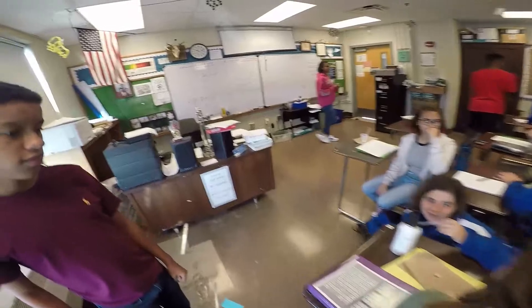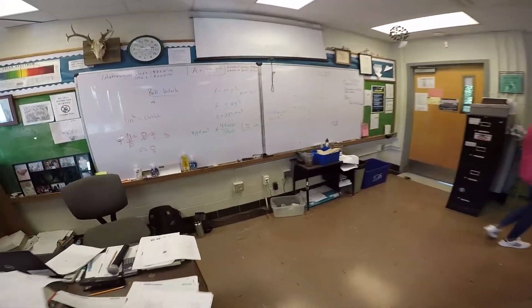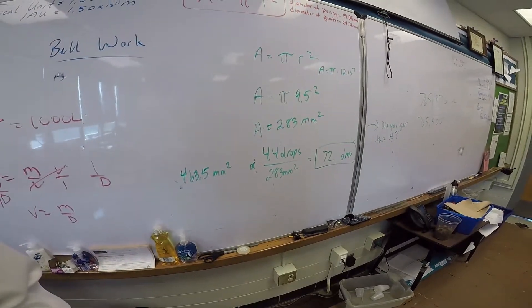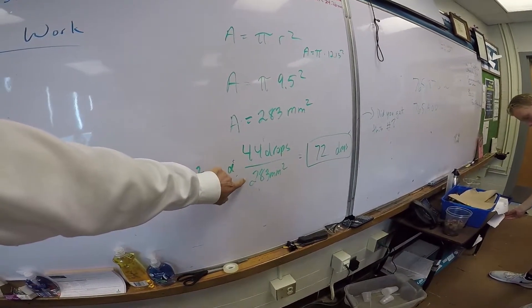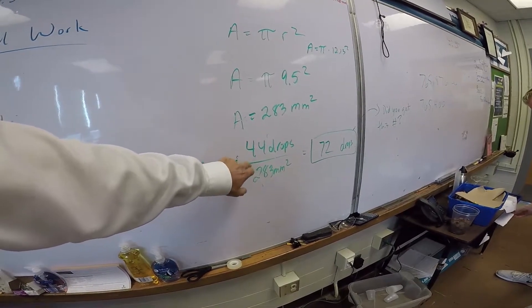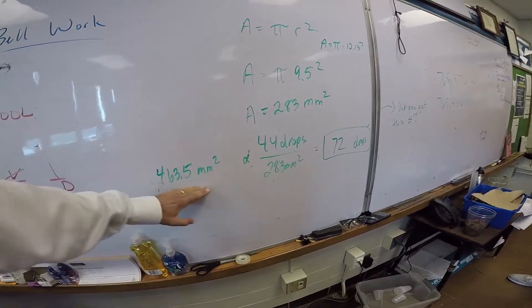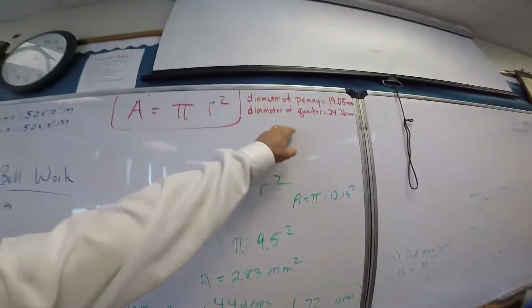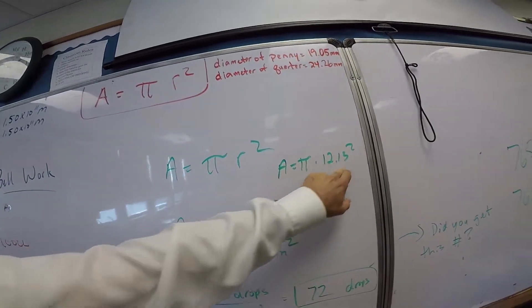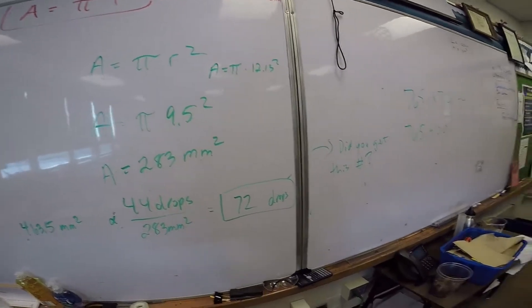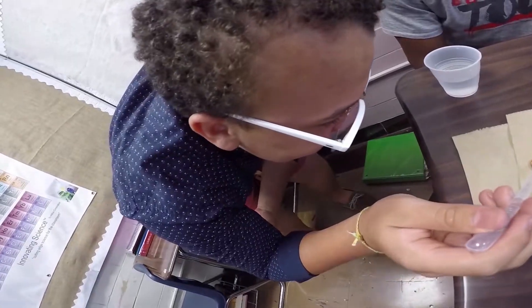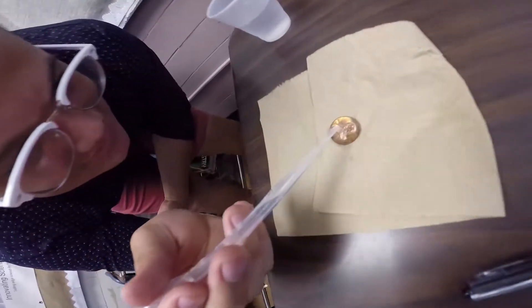If somebody bumps you, you can see how it can change your variable. So if this was the penny — 44 drops — we're trying to predict what the quarter will be. The diameter of the quarter is this; we're solving for the area, and the prediction is 72 drops on the quarter. Right now: 35, 36.